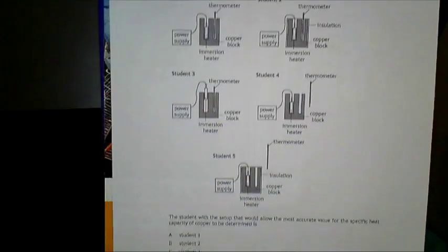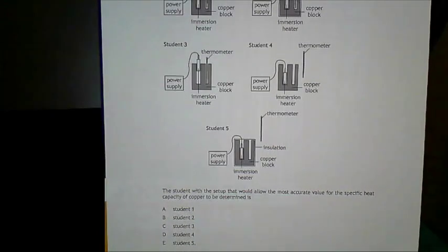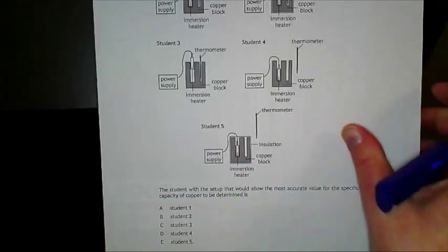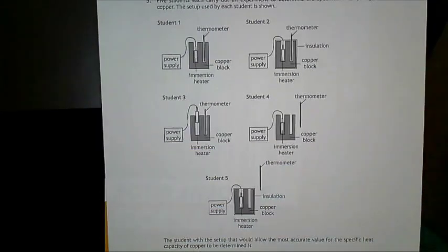I decided to start with student five here. We had a look at it and then I asked why that would not be the most accurate value for specific heat capacity. And they were very quick to notice that the thermometer was not within the system so you wouldn't get a good value. Then we could move on to the others and we could bring that down as well and then I could ask them to put their answers into the chat for what they would have put as their answer. So just a very quick way for me to get a full class overview of how they were doing and just check that they were understanding that.